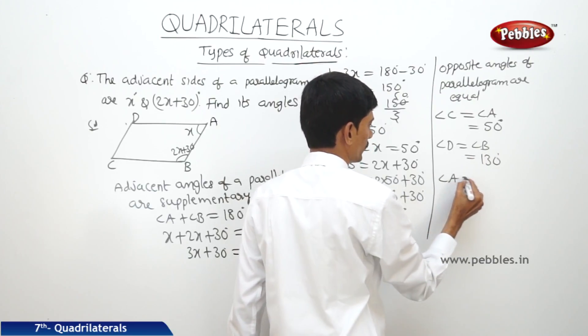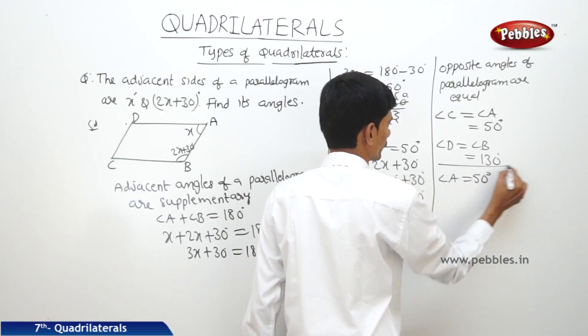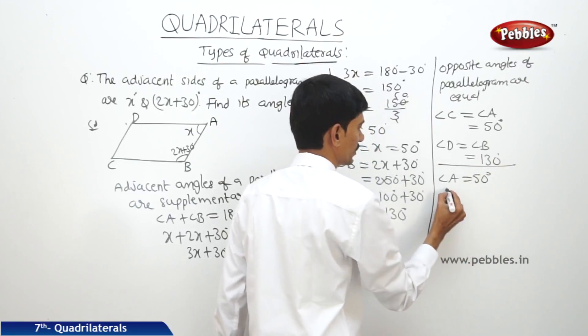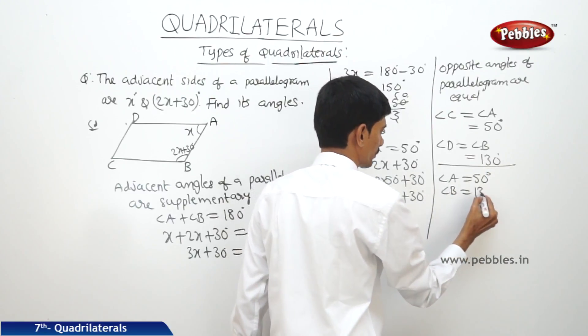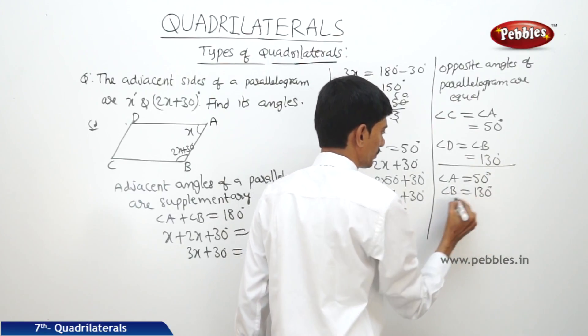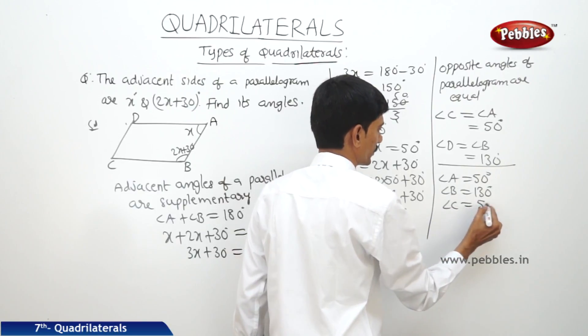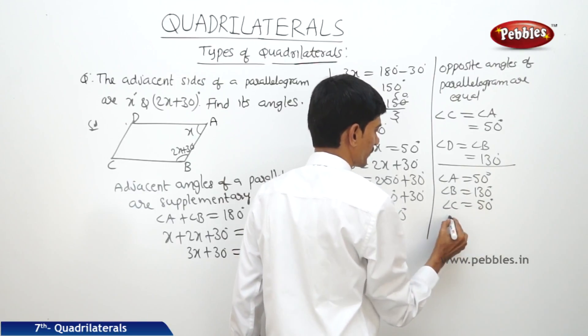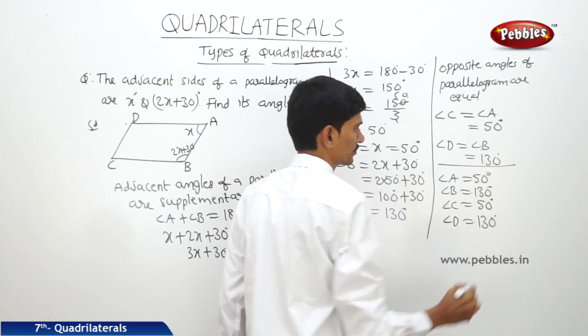So angle A equals 50 degrees, angle B equals 130 degrees, angle C equals 50 degrees, and angle D equals 130 degrees.